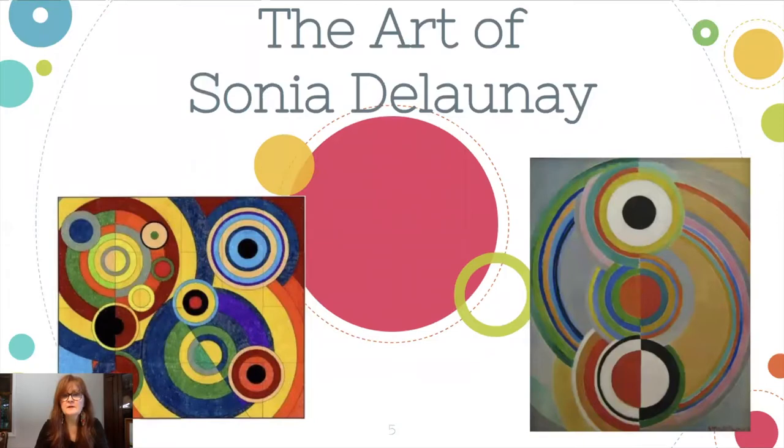Here are some of Sonia Delaunay's famous paintings. You can see she used the theme of circles over and over again. Sometimes she divided the lines straight down the center, and then changing colors back and forth.